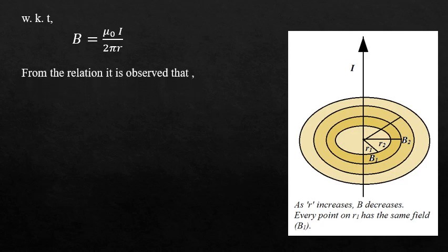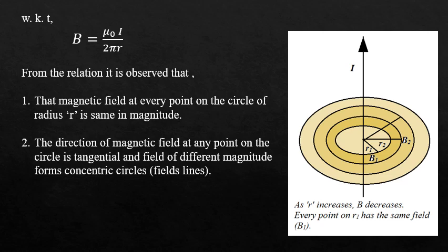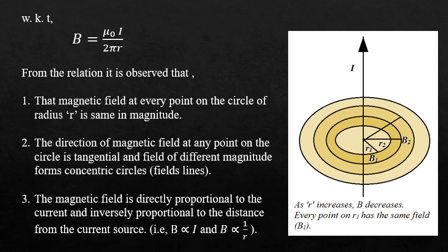From this relation, the magnetic field at every point on the circle of radius R has the same magnitude. The direction of magnetic field at any point on the circle is tangential to the circle, and different magnitudes of magnetic field form concentric circles. The magnetic field is directly proportional to the current and inversely proportional to the distance from the current source.